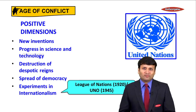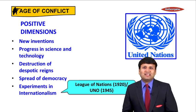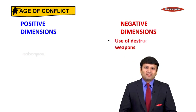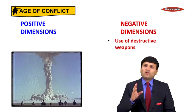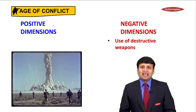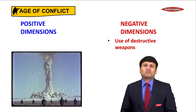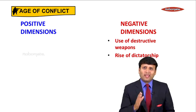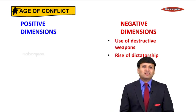Every coin has two sides — if there are positive dimensions, there are also negative dimensions. The use of destructive weapons happened in the 20th century; atom bombs were dropped on Japan's Hiroshima and Nagasaki, destroying entire generations. Another negative dimension was the rise of dictatorship — one of the most cruel forms of government — where a person or a party decides to run a country on their own terms, just or unjust, causing great trouble for the people.